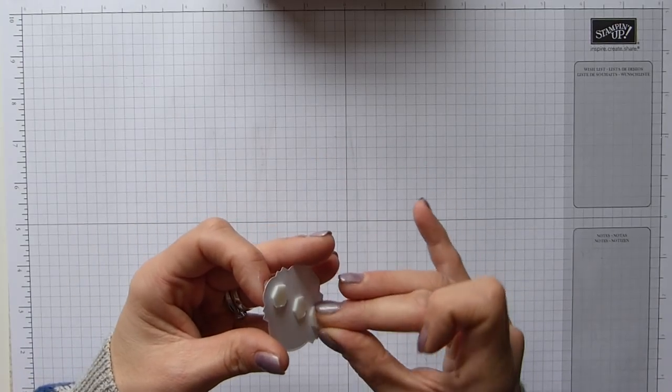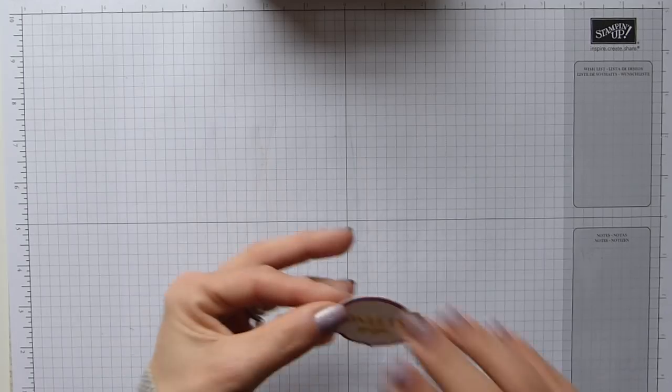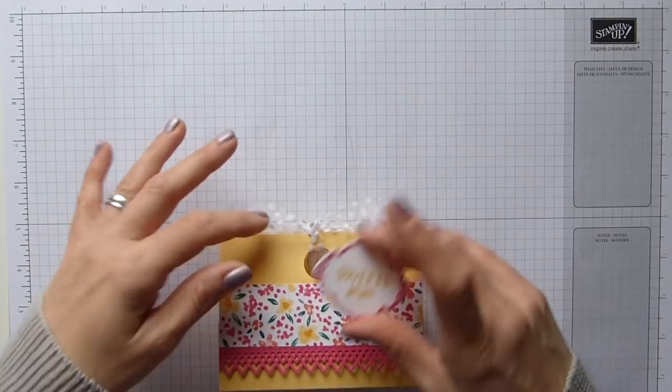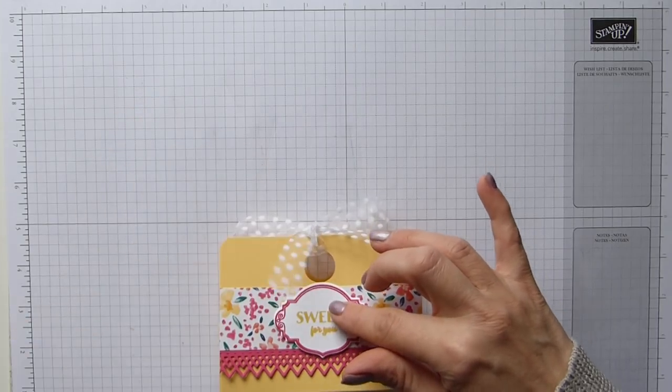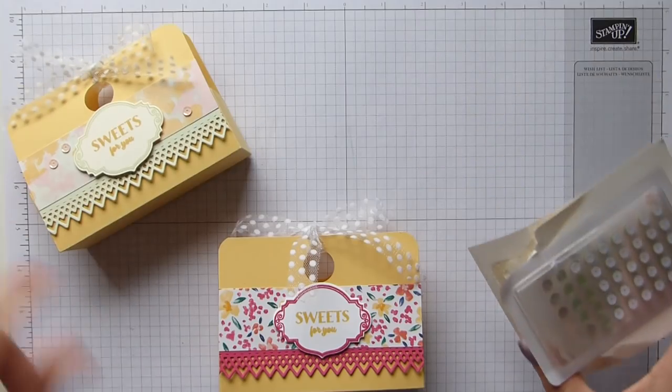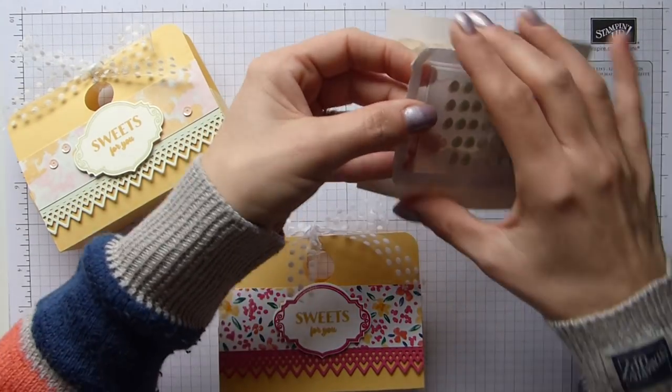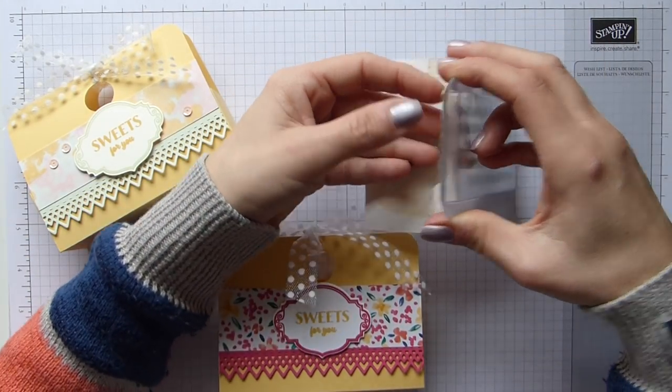Then I have my lovely die cut element there. I'm just going to pop some dimensionals on the back. Just like that. Then I simply used the beautiful, basic, adhesive backed sequins to just add a few more little details too.